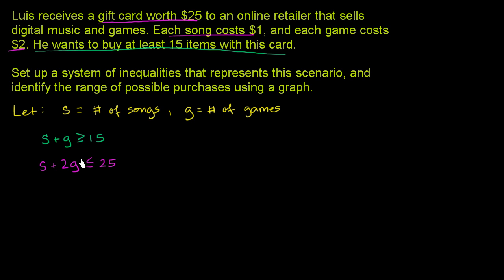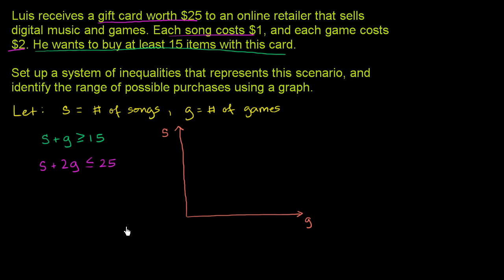So we have a system of inequalities, and now we can graph them. To graph them, we just have to pick something to go on the vertical axis and the horizontal axis. I'm only going to draw the first quadrant, since he's only going to buy a positive number of songs and games. Let's put songs on the vertical axis and games on the horizontal axis. Since s is on the vertical axis, I like to solve for s so it's in the traditional slope-intercept form.